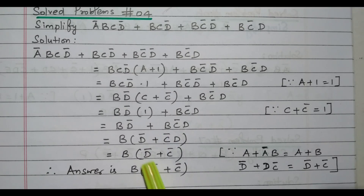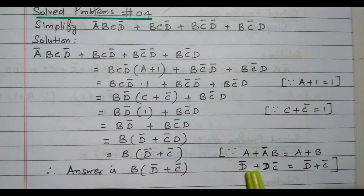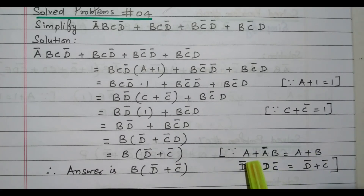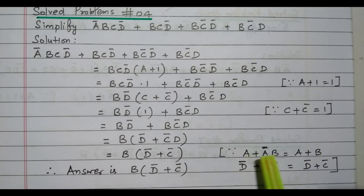We need to take any common term outside. Here b is available commonly in both terms. If we take b outside, the remaining terms are d̄ and c̄d. So we have b(d̄ + c̄d). Now how do we reduce d̄ + c̄d further? A theorem is available: a + āb = a + b.